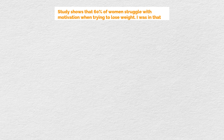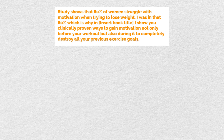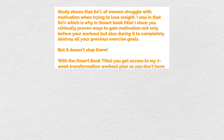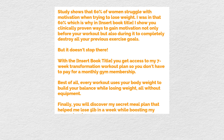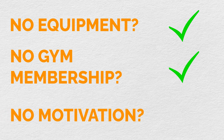If you tell someone exactly what their problem is and how it makes them feel, and you're correct, they will automatically assume that you have the solution. For example, if your customer's problems are that they feel unmotivated, don't have money for gym equipment, and they're vegetarian, the rapport section might look like this: 'Studies show that 60% of women struggle with motivation when trying to lose weight. I was in that 60%, which is why [book title] shows you clinically proven ways to gain motivation not only before your workout but during it. With [book title] you get access to a seven-week transformation workout plan so you don't have to pay for a monthly gym membership — every workout uses your body weight, no equipment needed. You'll also discover a secret meal plan that helped me lose five pounds in a week while boosting energy levels — and best of all, it works for vegetarians too.' Not only have I specified their problems, I sold the information in my book as a solution. No equipment — my book solves that. No gym membership — my book solves that. No motivation — my book solves that.